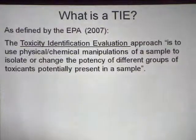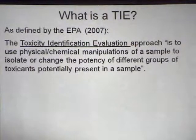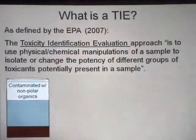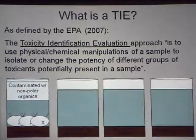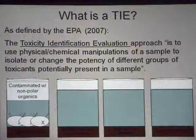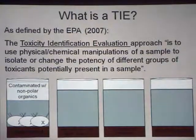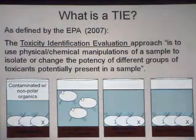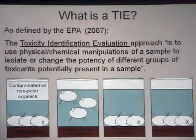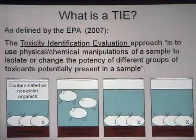We'll start with the definition of what TIE is. Toxic Identification Evaluation uses some type of physical-chemical manipulation of a sample to isolate or change the potency of different groups of toxicants potentially present in the sample. If you have a sediment contaminated with a non-polar organic at high enough concentration, you should be able to amend the sediments for different classes of contaminants and remove that toxicity. It's a biological and chemical manipulation combined technique.